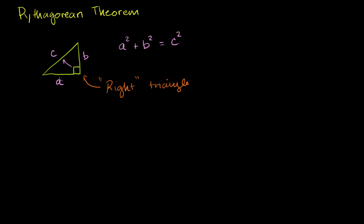We can use this information — if we know two of these sides, we can use this theorem to solve for the third. One more piece of terminology: this long side, the longest side of our right triangle, the side that is opposite the right angle — this is c in this example — is called the hypotenuse. It's a fancy word for a simple idea: the longest side of a right triangle, the side opposite the 90-degree angle, is called the hypotenuse.